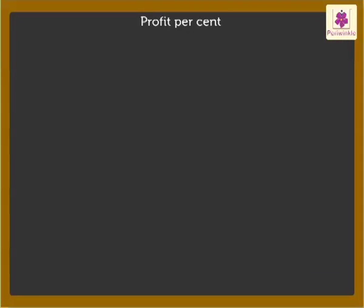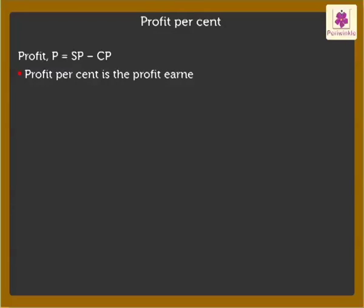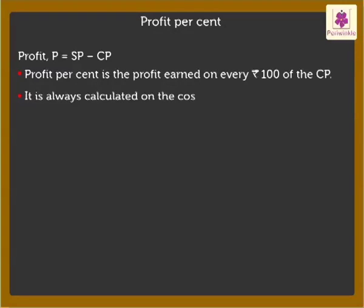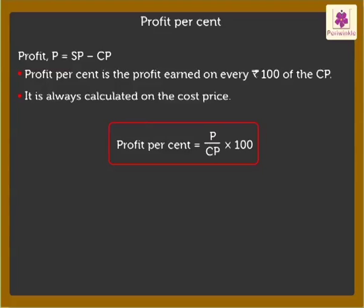Firstly, let's begin with how to find the profit percent. We know that profit is equal to selling price minus cost price. The profit percent is the profit earned on every 100 rupees of the cost price. Hence, it is always calculated on the cost price of the article. Thus, profit percent is equal to profit upon cost price into 100. Let's understand it in a better way by solving an example with Tim.